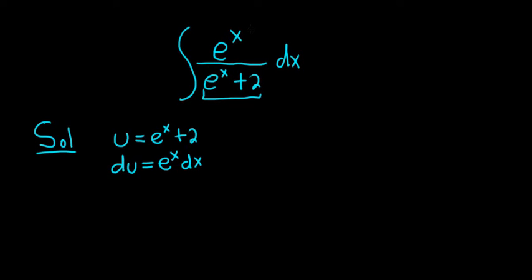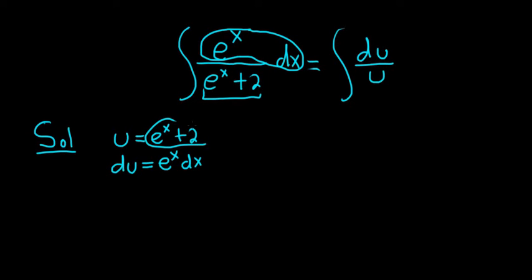All right, good stuff. Everything works out perfectly in this problem. So e to the x dx is right there in the numerator. So this is equal to du, right, because that's e to the x dx. On the bottom, we have simply u, right, because u is e to the x plus 2.